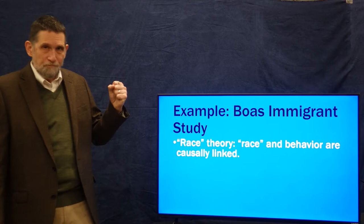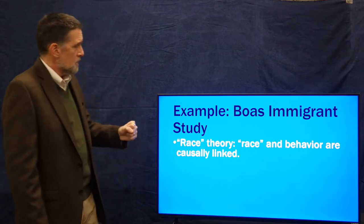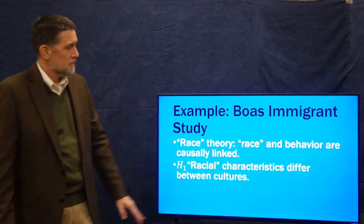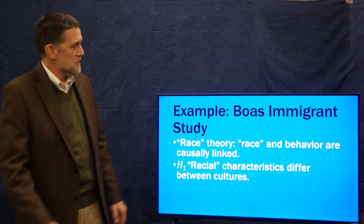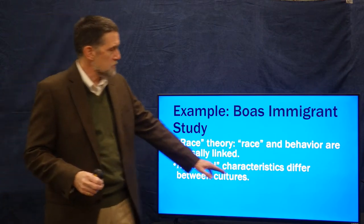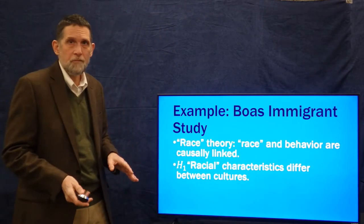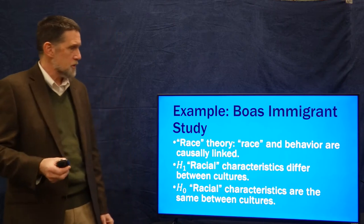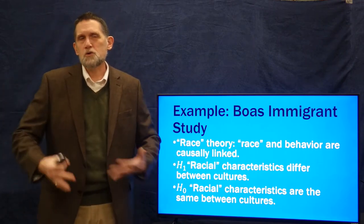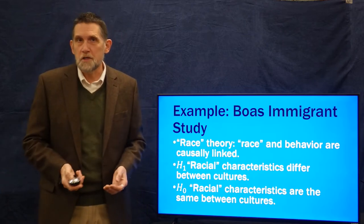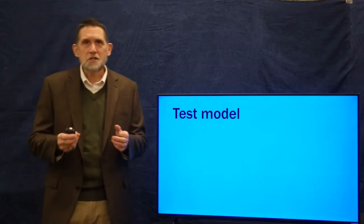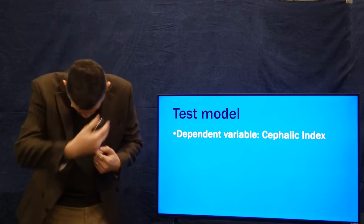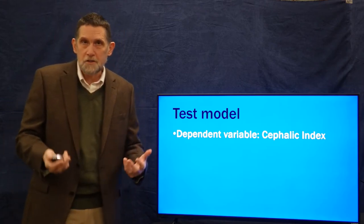In race theory, we would hypothesize that race and behavior are causally linked. So our research hypothesis, if we are looking at variation, would be that racial characteristics differ between identified cultures, because culture and race are causally linked. The null hypothesis would be that racial characteristics are the same between various cultures, or that they're randomly distributed among them. The test model we'll use, given Boas's data, is the cephalic index — how round the head is — which was thought to be related to intelligence and behavior.